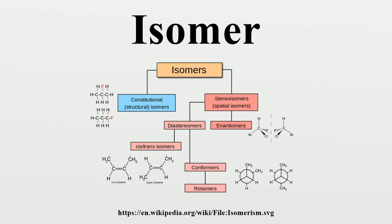E/Z isomers, which have restricted rotation within the molecule — to be specific, isomers containing a double bond — are configurational isomers. They are classified as diastereomers, whether or not they contain any chiral centers. E/Z notation depicts absolute stereochemistry, which is an unambiguous descriptor based on CIP priorities.